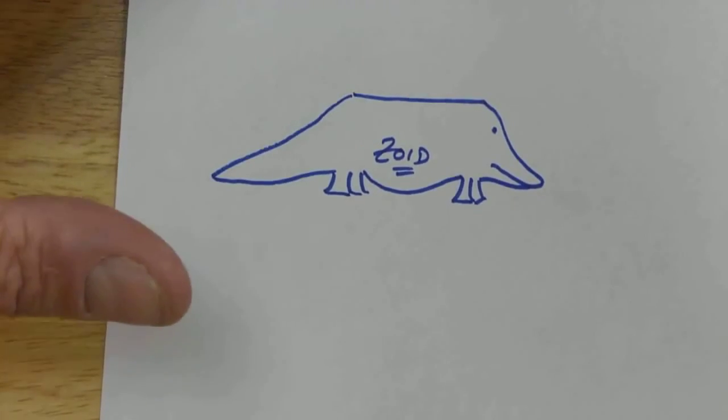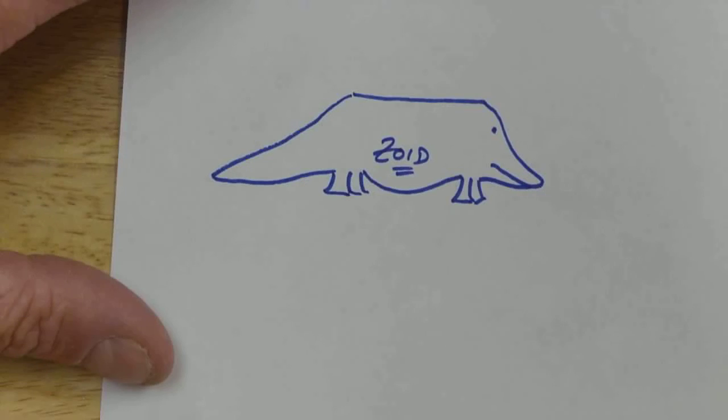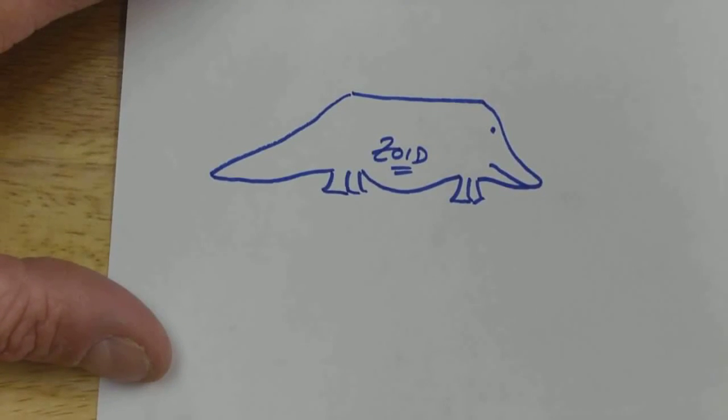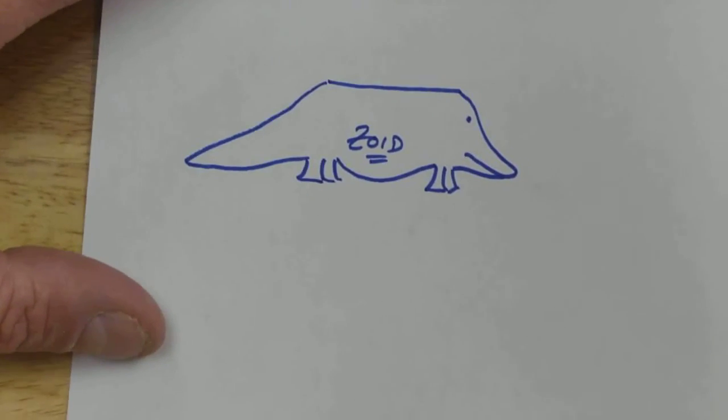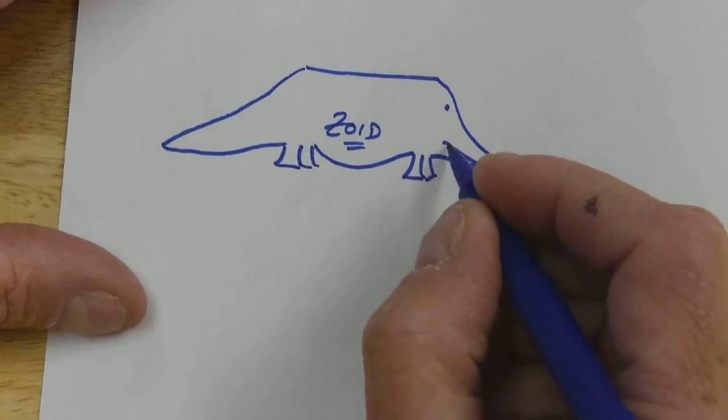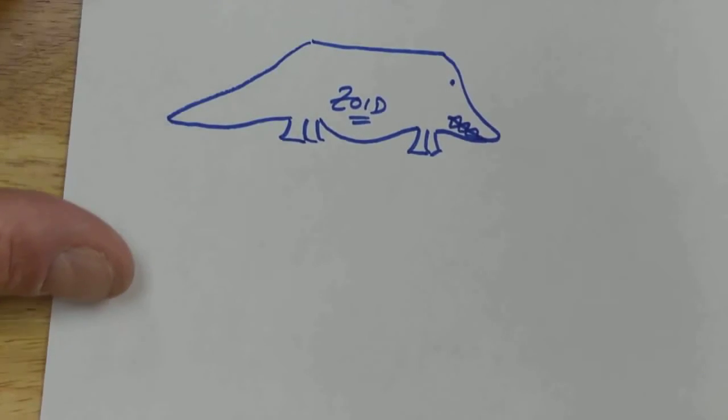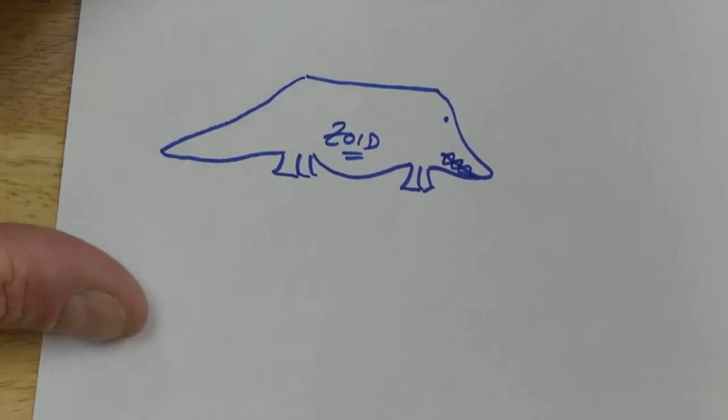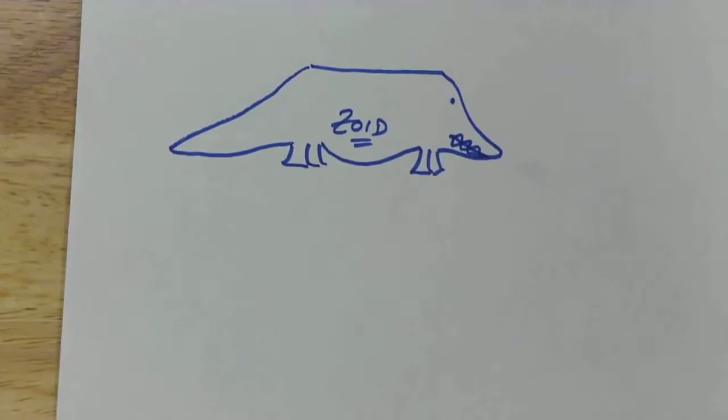This thing was called a zoid. I probably need to make it a little bit more vicious because it looked like it was kind of smiling at the time.